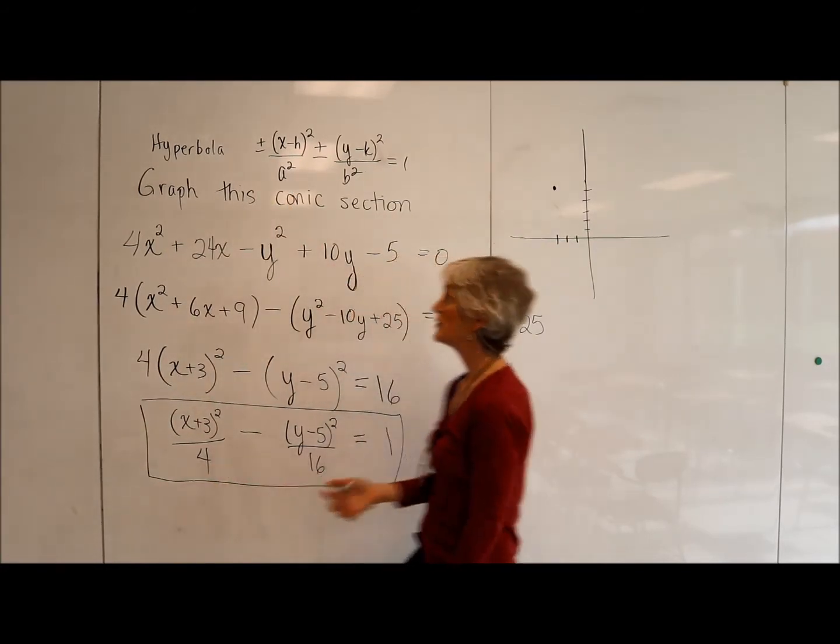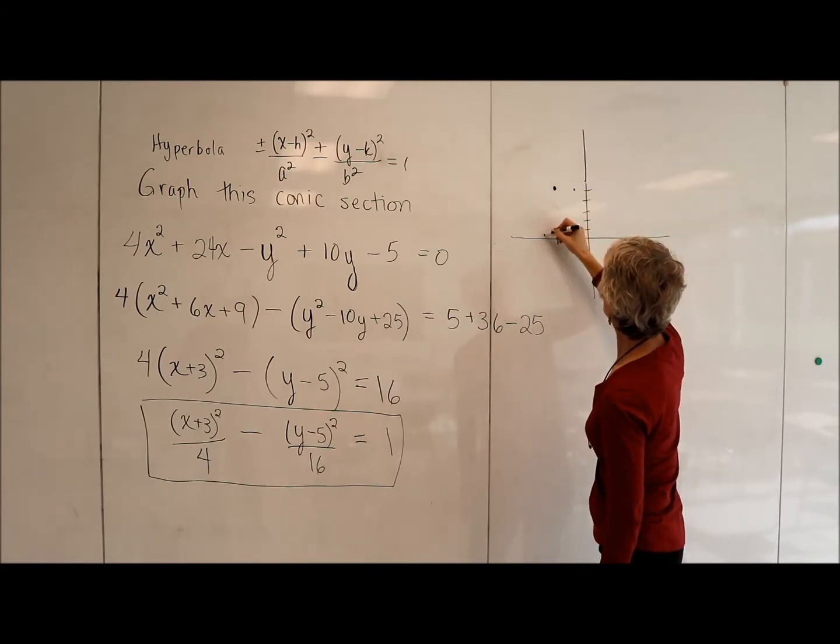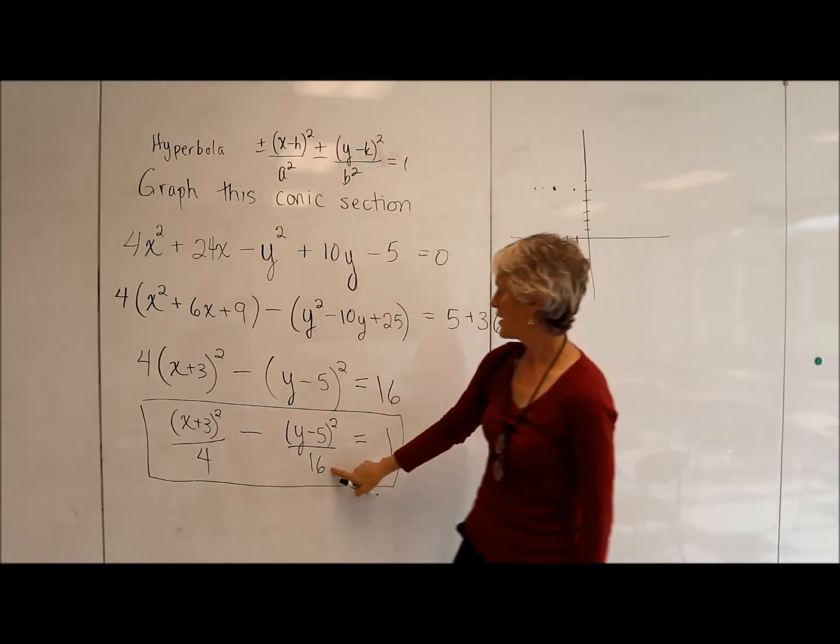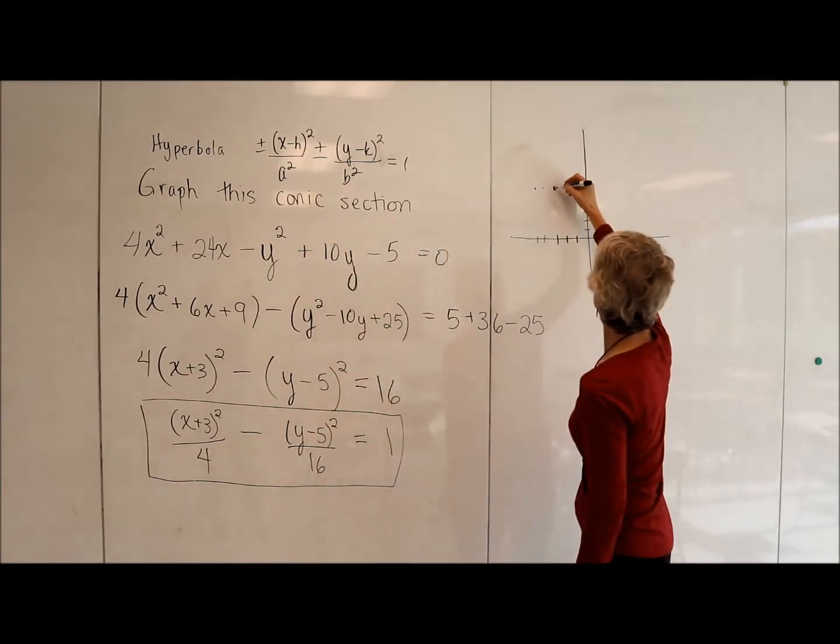So I'm going to take my a, which is the square root of 4, 2, and I'm going to go 2 to the right and 2 to the left. And I'm going to go up 4 and down 4 from my little center.